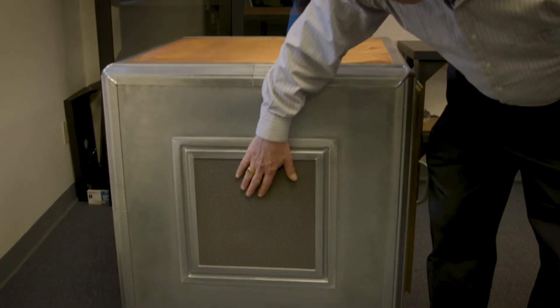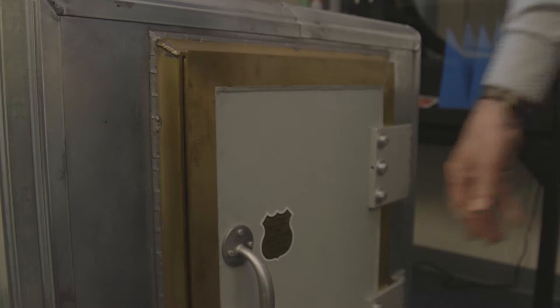When we're building an anechoic chamber we're trying to absorb radio frequency or electromagnetic waves the same way as a sound studio is trying to prevent sound echoes. The basic construction of a chamber is a steel box.